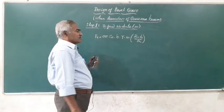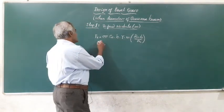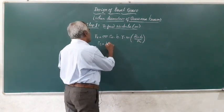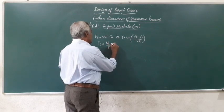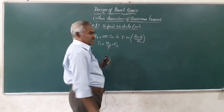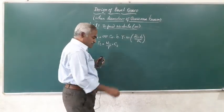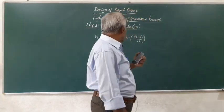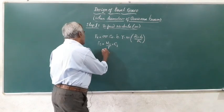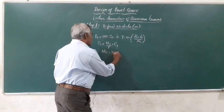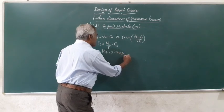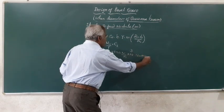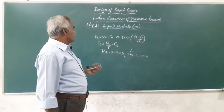In this equation, Ft is the tangential load on the gear tooth, given by torque divided by radius multiplied by a service factor Cs. To find the torque Mt, we need the power to be transmitted and the speed. The formula is: Mt = 9550 × N / n × 10³ Newton-millimeters.